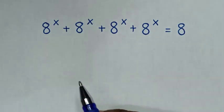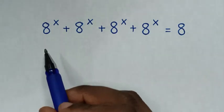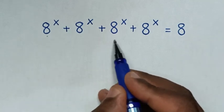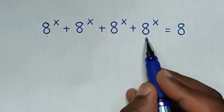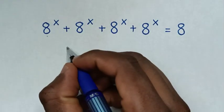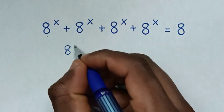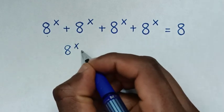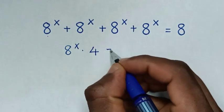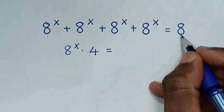So from here we have 8 power x: 1, 2, 3, 4. So it will be 8 power x times 4 is equal to 8.